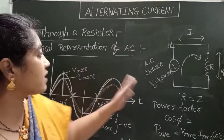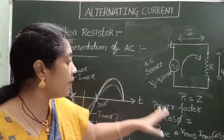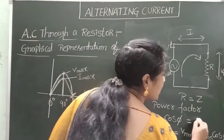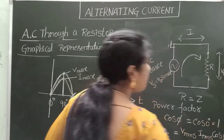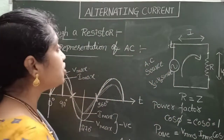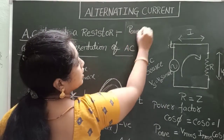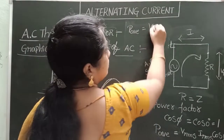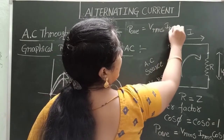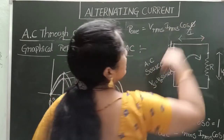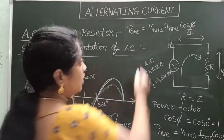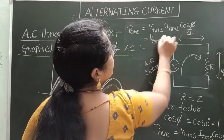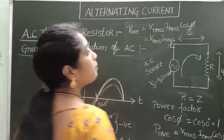What about the power factor in a pure resistive circuit? Power factor is generally cos φ. Here φ = 0, so cos 0° = 1, meaning the power factor equals 1. The average power is P = Vrms × Irms × cos φ. Since cos φ = 1, the average power equals Vrms × Irms. This is the average power of the pure resistive circuit.